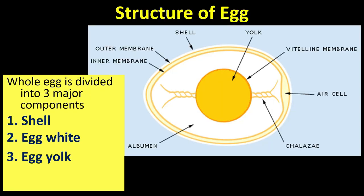The structure of egg: the whole egg is divided into three major components — the shell, the egg white, and the egg yolk. You can see the diagram of the structure of egg. You can see the yolk inside, vitelline membrane, air cell, chalaza, albumen, outer membrane, and inner membrane.